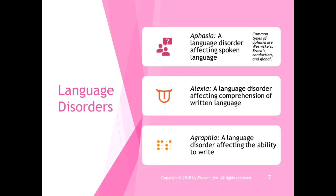These are three language disorders we're going to talk about. Aphasia is a language disorder that affects spoken language — we'll cover Wernicke's, Broca's, conduction, and global aphasia. Alexia is a language disorder affecting the comprehension of written language. Agraphia is a language disorder affecting the ability to write. You could have aphasia and still be able to read and write, or you could have aphasia combined with alexia.